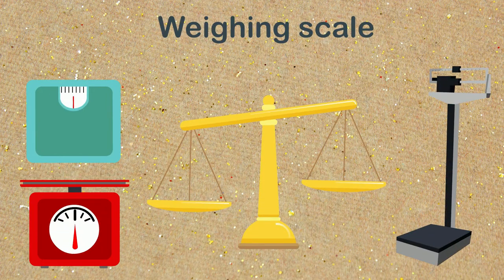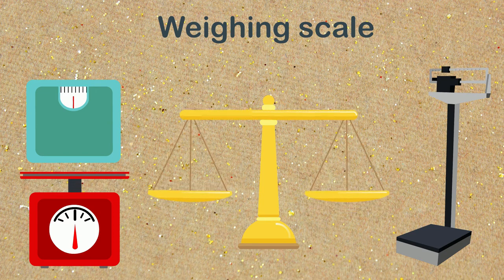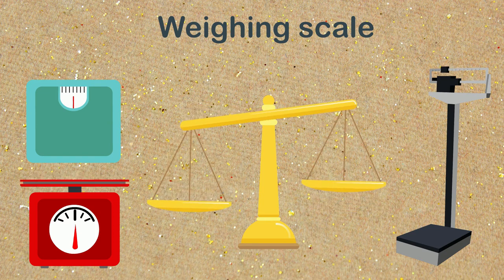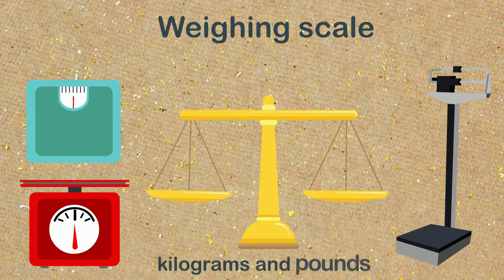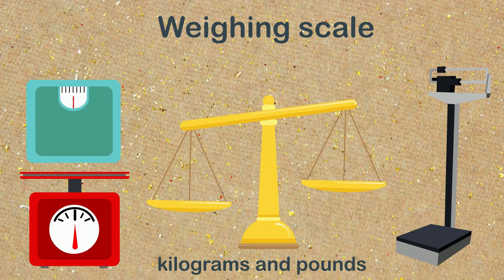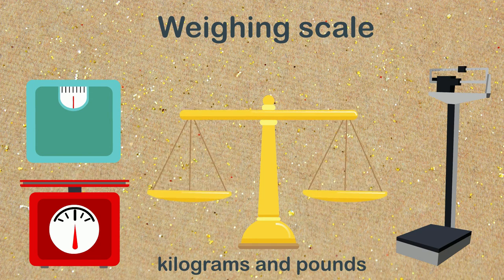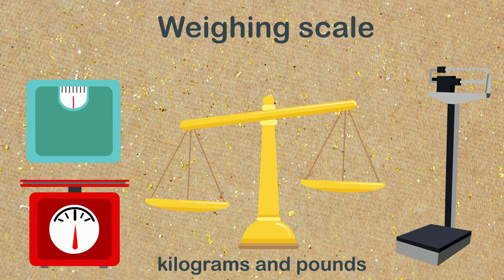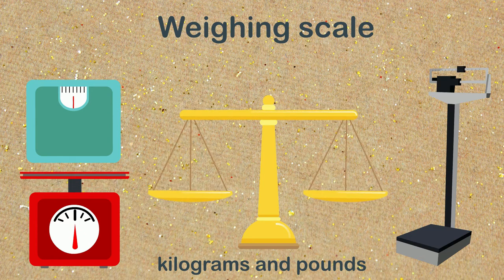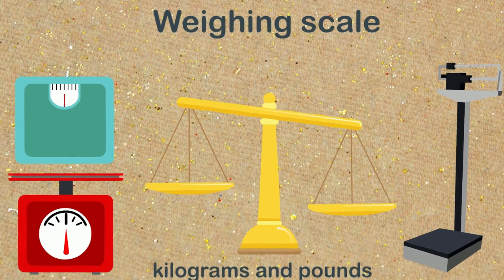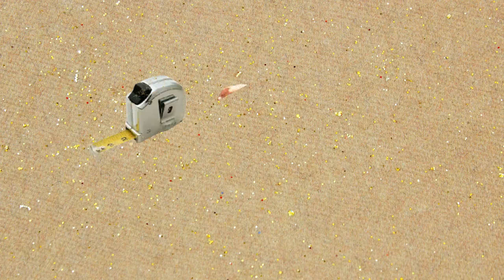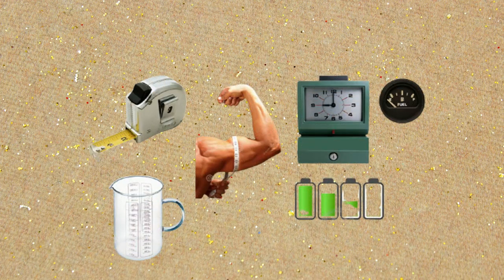For example, a weighing scale is a measuring instrument which measures your weight in kilograms and pounds. These terms — kilograms and pounds — are measuring units of weight. The measuring system is not only useful for size, but in our daily life too.